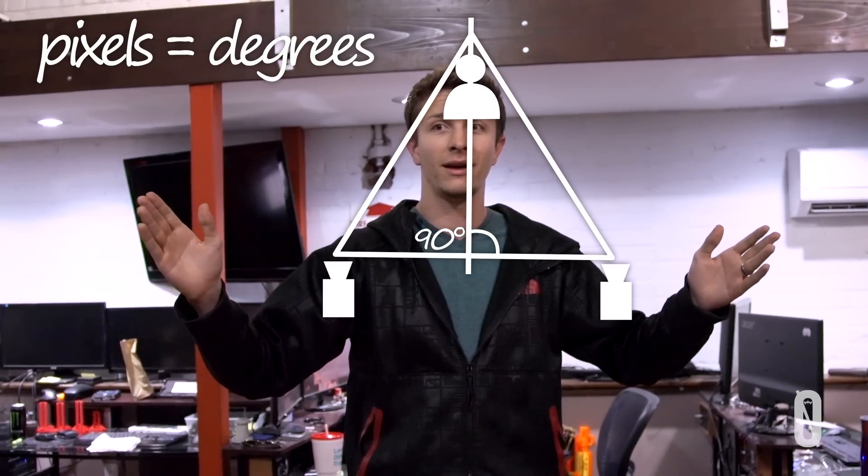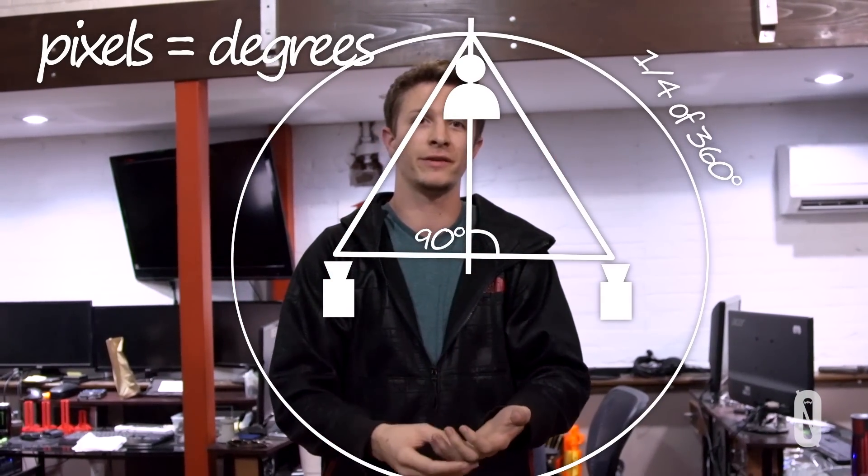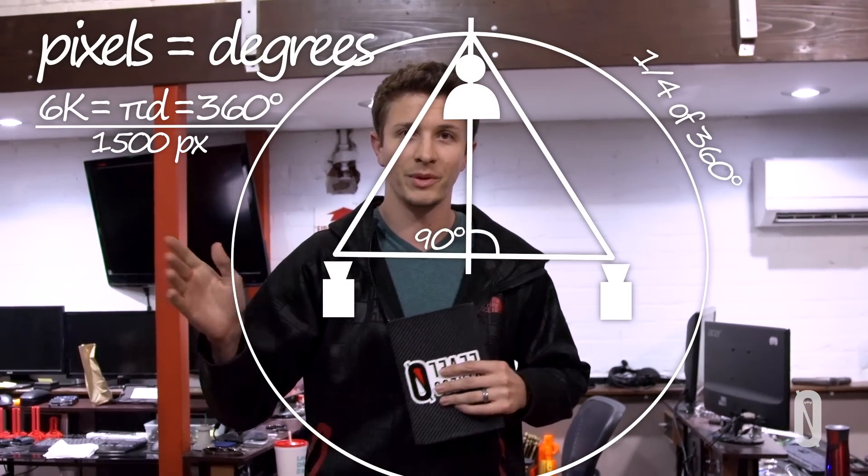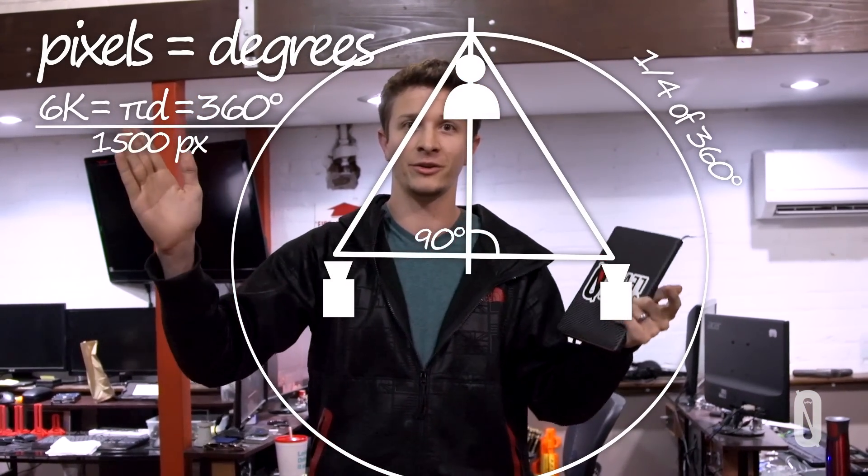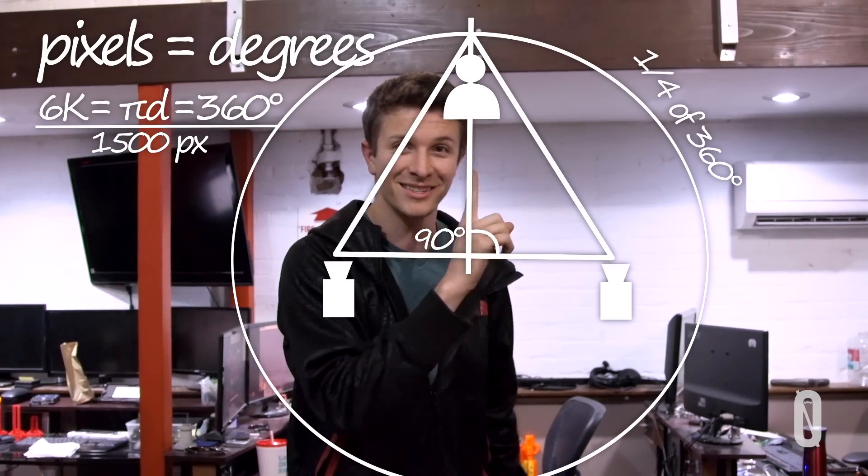If you know how many pixels a quarter of your 360-degree field is - for us, since we're doing 6K compositions, that means a quarter of that is only gonna be 1500 pixels. So as soon as you go off frame at 1500 pixels, that means your point is right between your eyes.